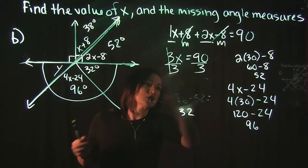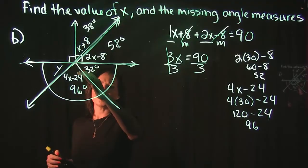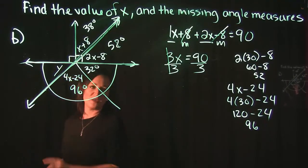So what that's going to look like here is if we take 180 and then subtract away the 32, subtract away the 96, it's going to give us this missing piece over here.